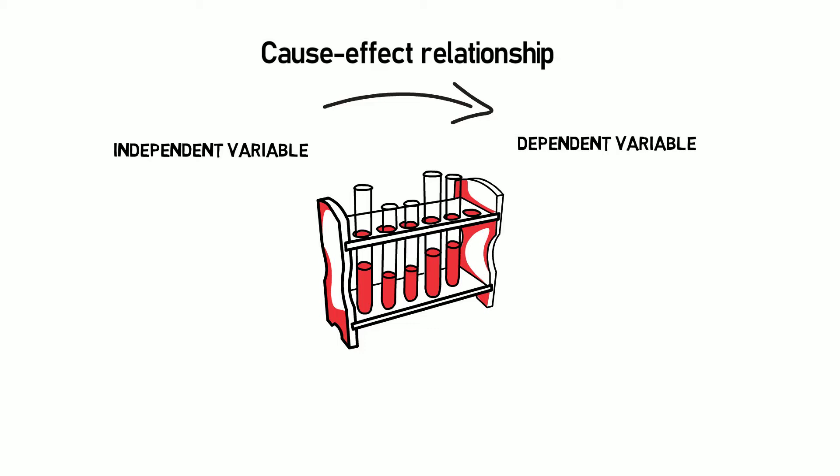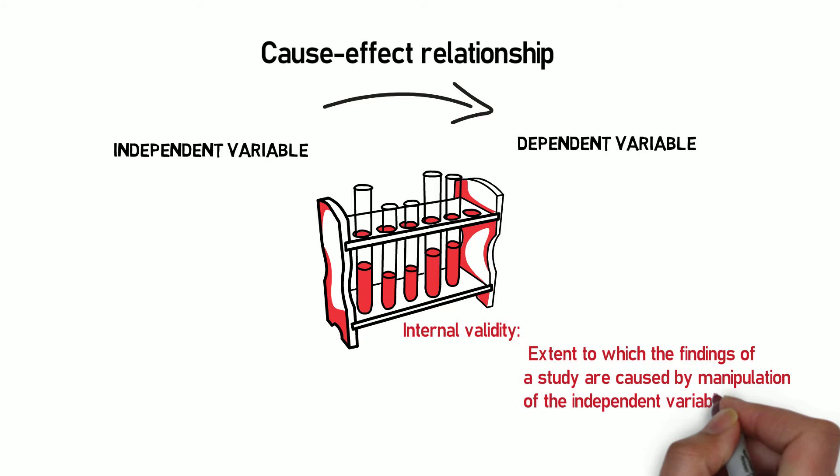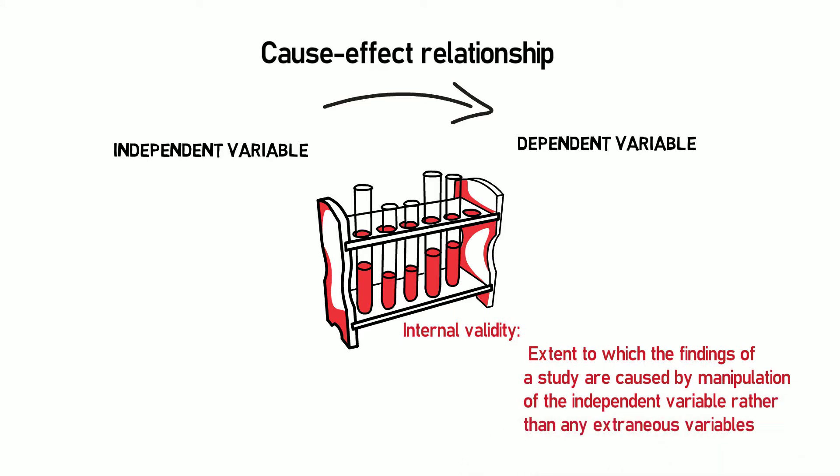But the question is: the change you saw in the dependent variable may have been caused by some other variables that you might not have controlled, not known about, or not thought about. This really compromises the findings of your study. This is called internal validity — the extent to which the manipulation of the independent variable, rather than any extraneous variable, is causing the change in the dependent variable.